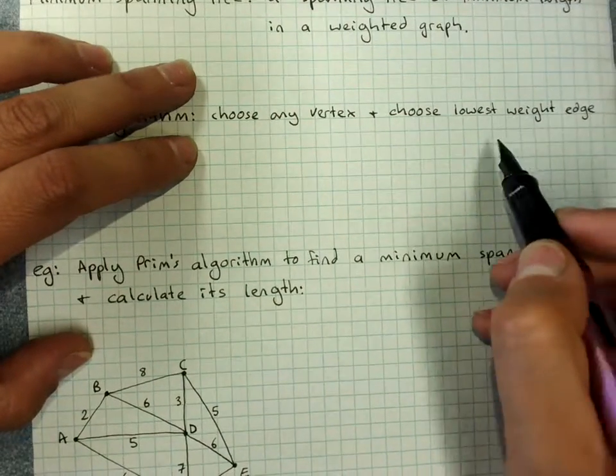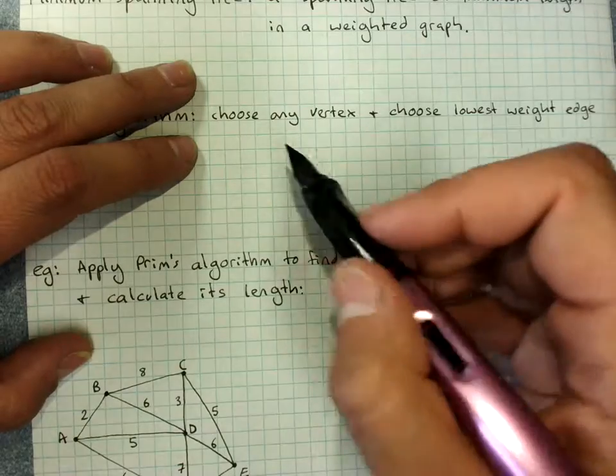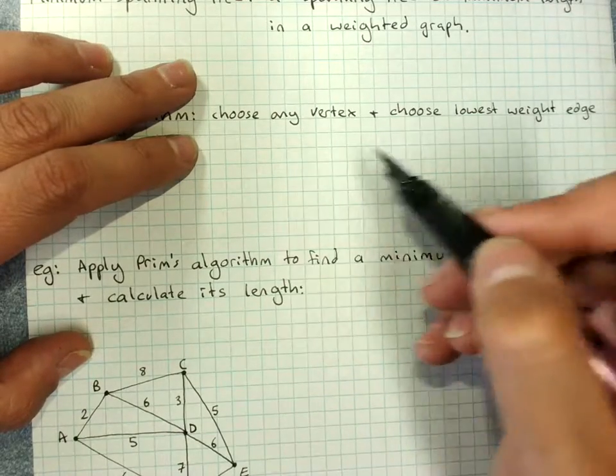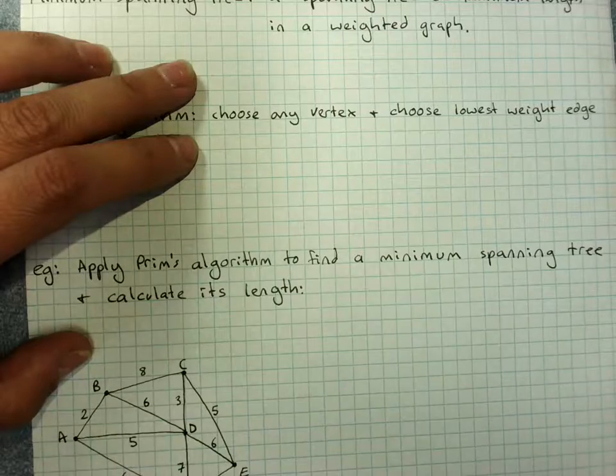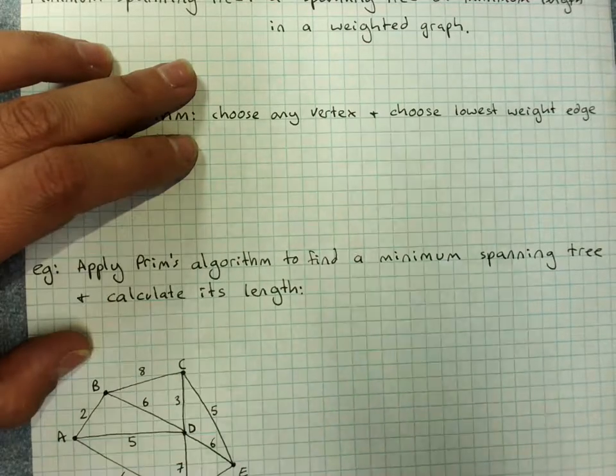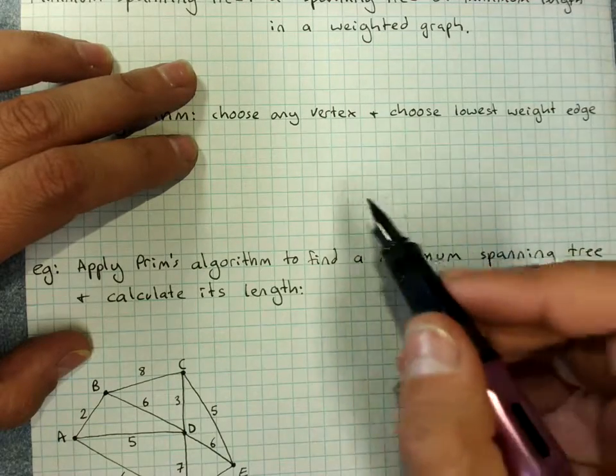Once you've chosen the lowest weight edge from your first vertex, you've got a second vertex to look at as well. And you look at both those vertices and choose the lowest weight edge.